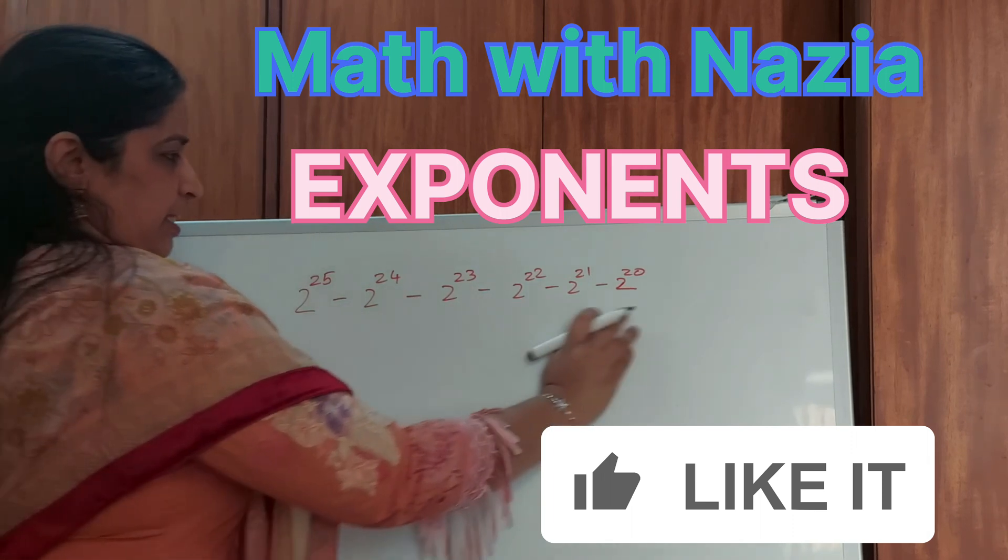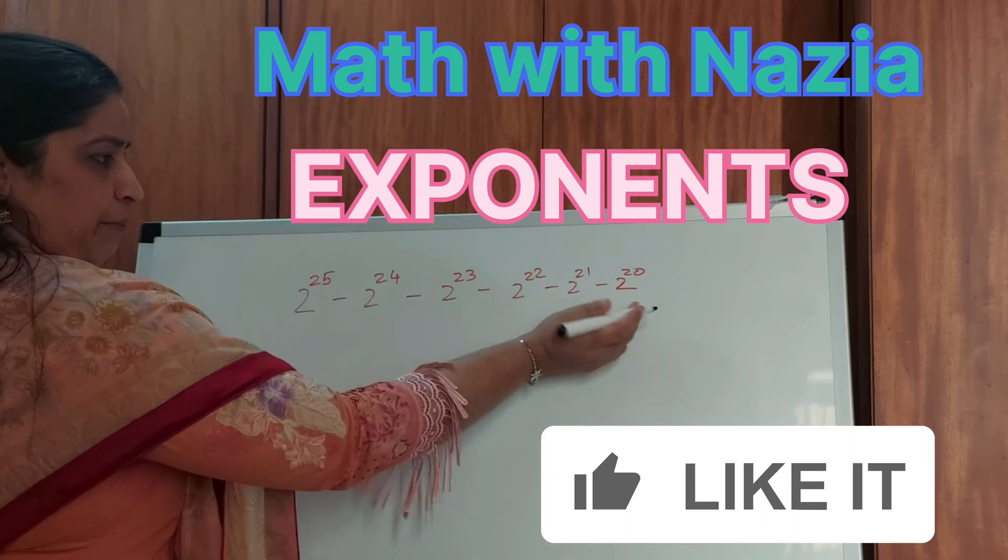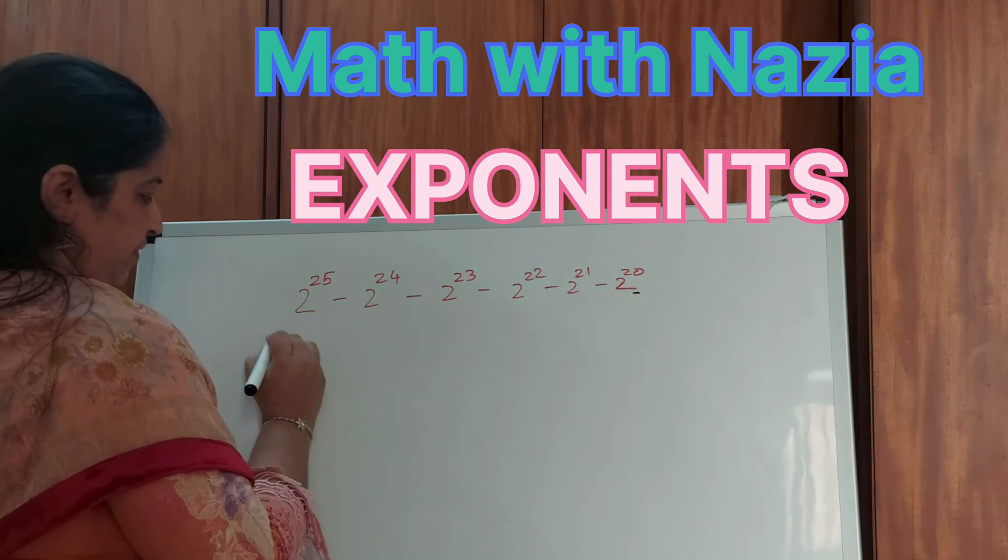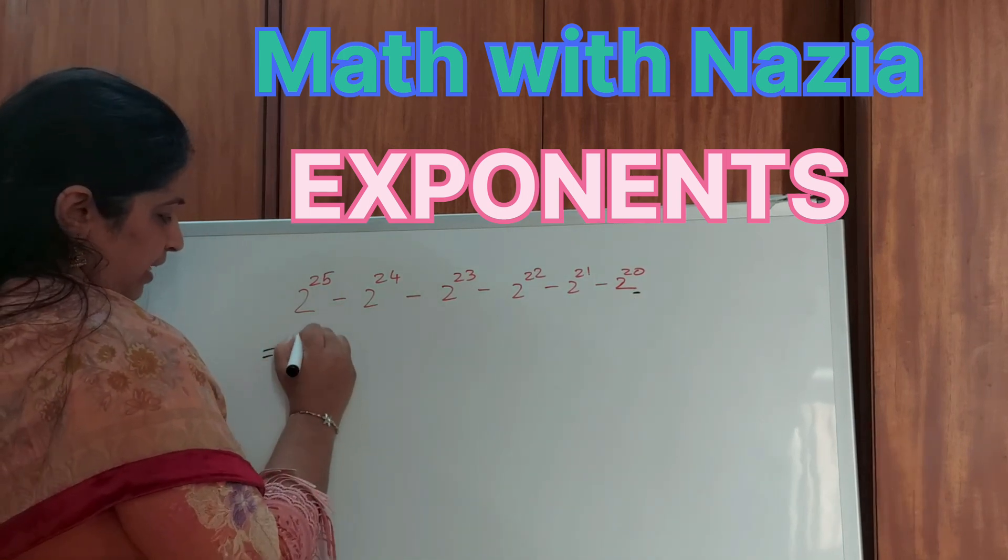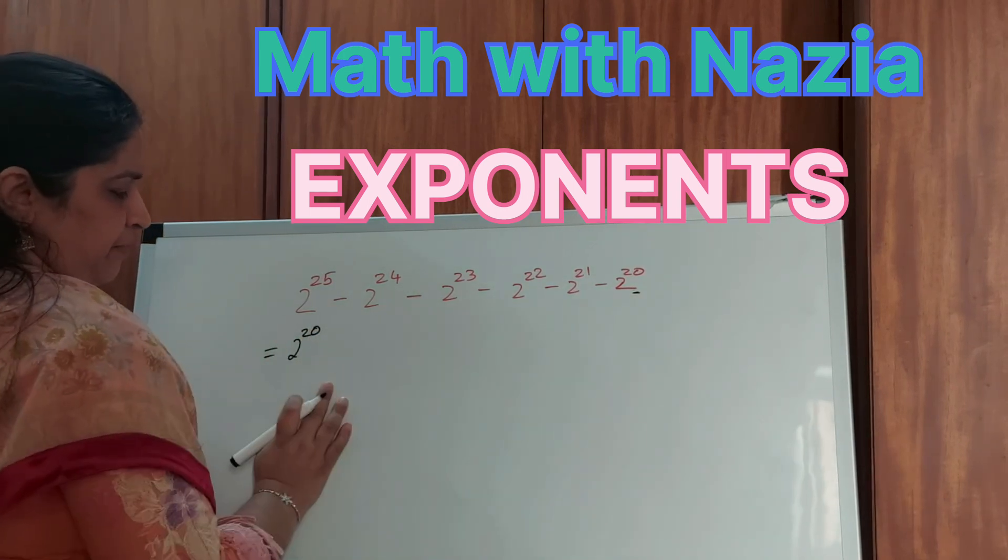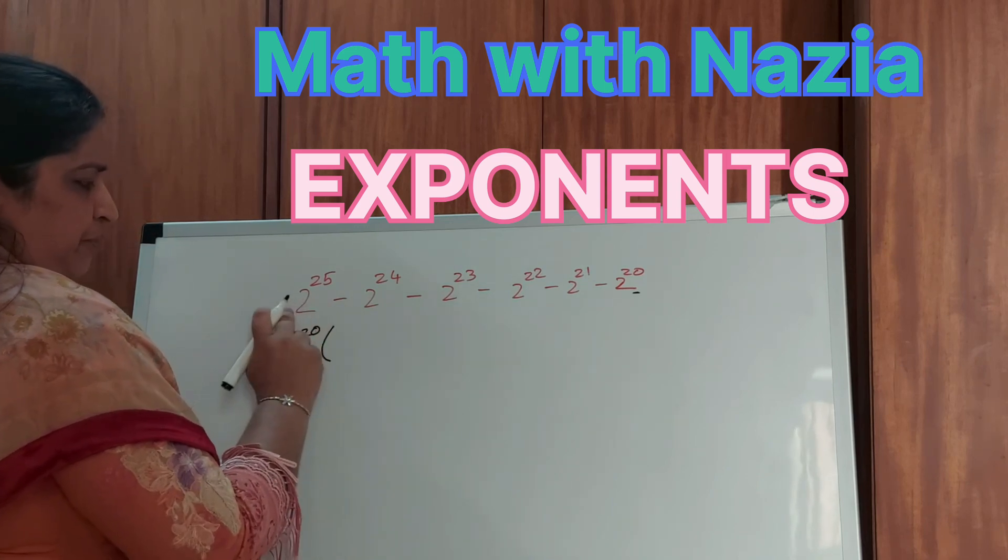So, as you could see all these have 2 to the power of 20 as common. This term is common in everything. What I will do is I will write 2 to the power of 20 common in everything.